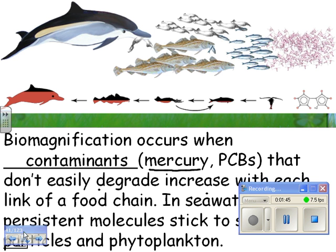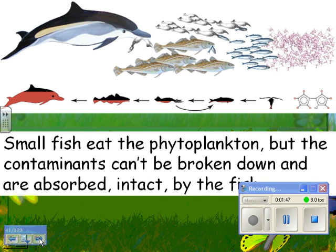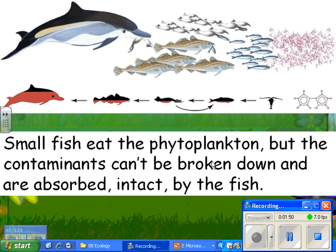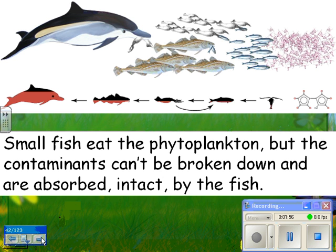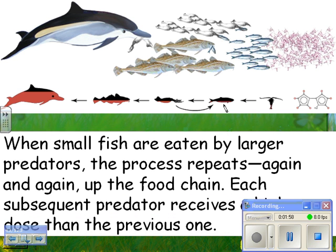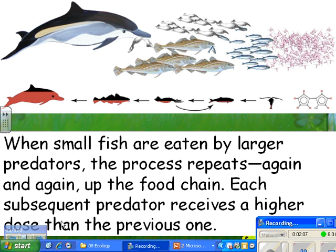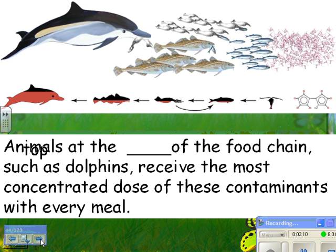Small fish eat the phytoplankton or the zooplankton that ate the phytoplankton, but the contaminants can't be broken down and are absorbed intact by the fish. When small fish are eaten by larger predators, the process repeats again and again up the food chain. Each subsequent predator receives a higher dose than the previous one, and animals at the top of the food chain, such as dolphins, receive the most concentrated dose of contaminants with every meal.